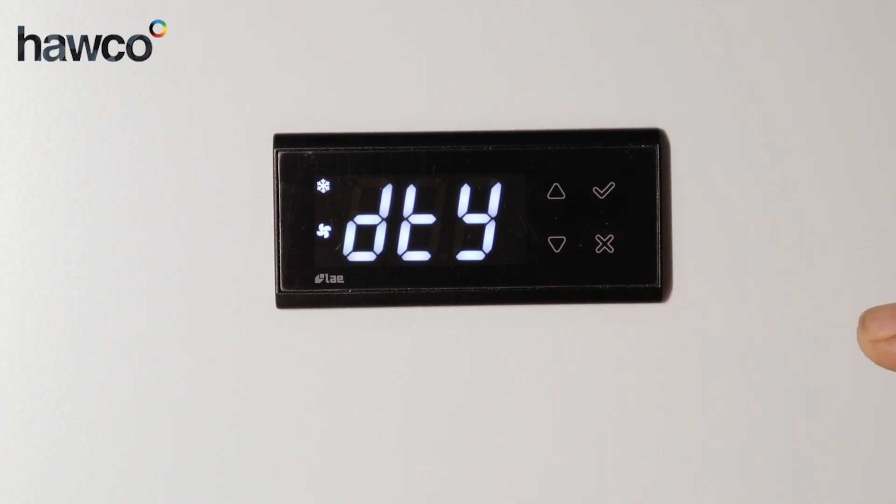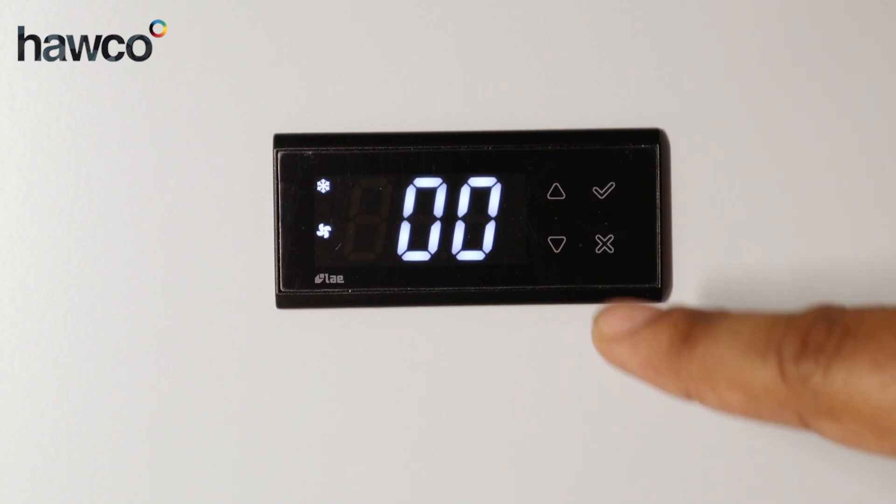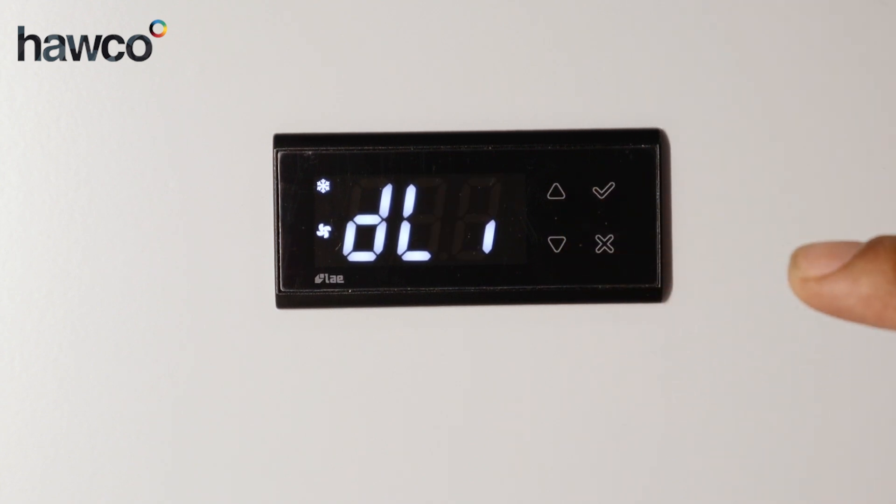DDY, this one is set to defrost type here. In this one we've got off cycle defrost. DPD, this is delay for pressure equalization for hot gas. We've got it set to zero for that one.